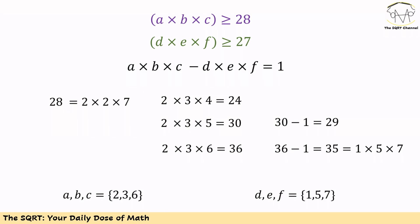So finally we have 2, 3, 6 for A, B, and C, and 1, 5, 7 for D, E, and F.